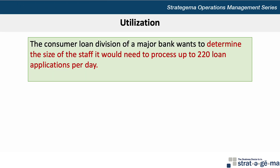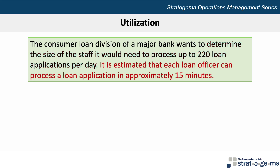Here's the data for our problem. The consumer loan division of a major bank wants to determine the size of the staff it would need to process up to 220 loan applications per day. It's estimated that each loan officer can process a loan application in approximately 15 minutes.